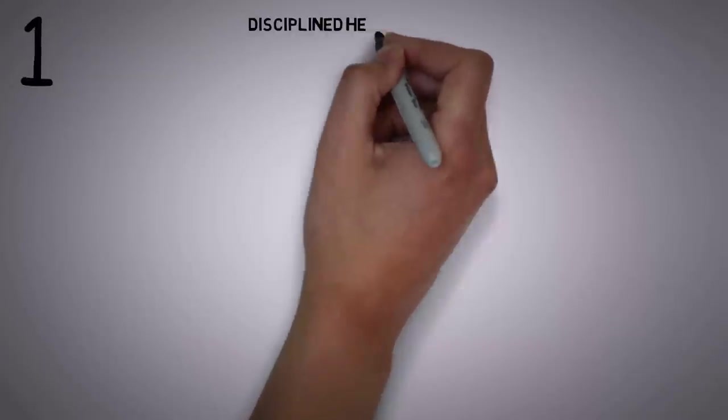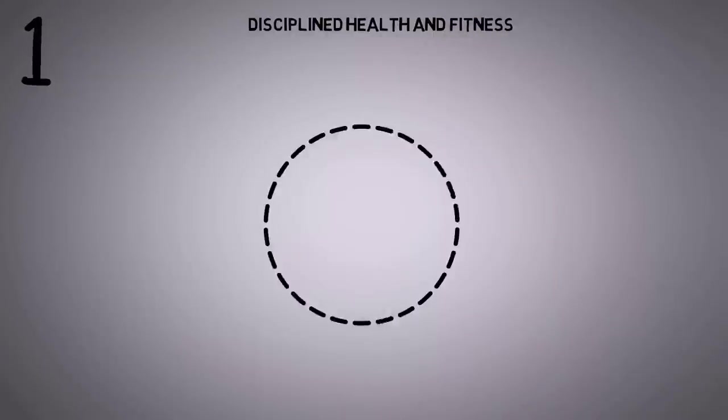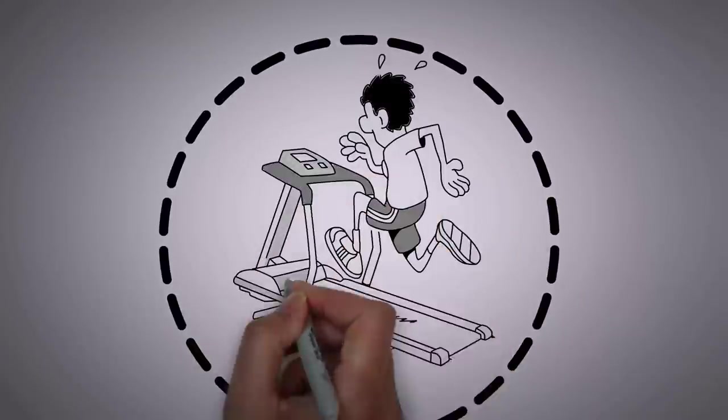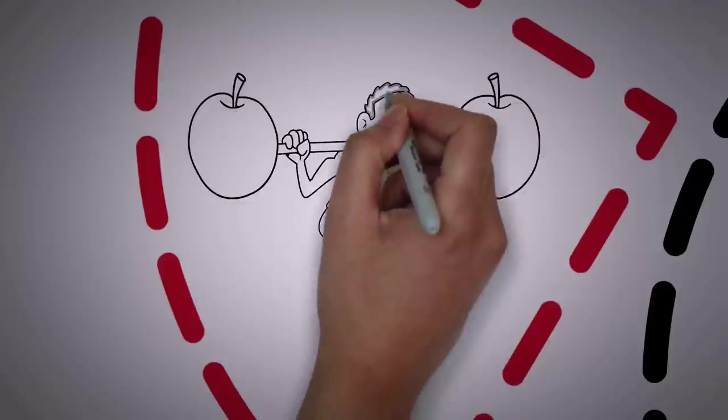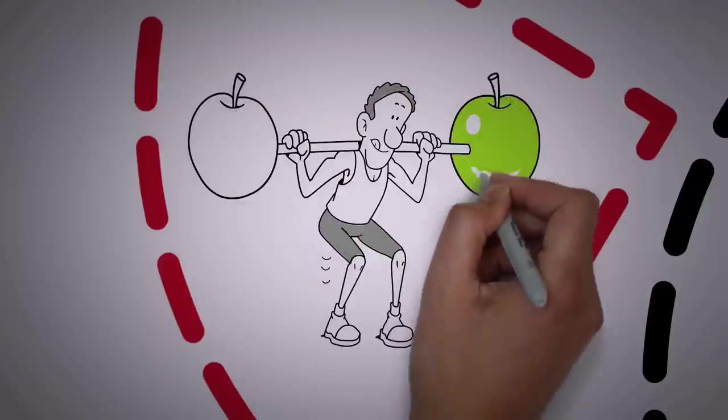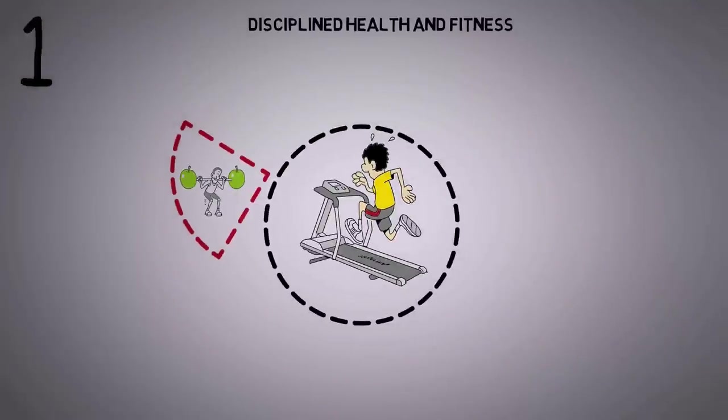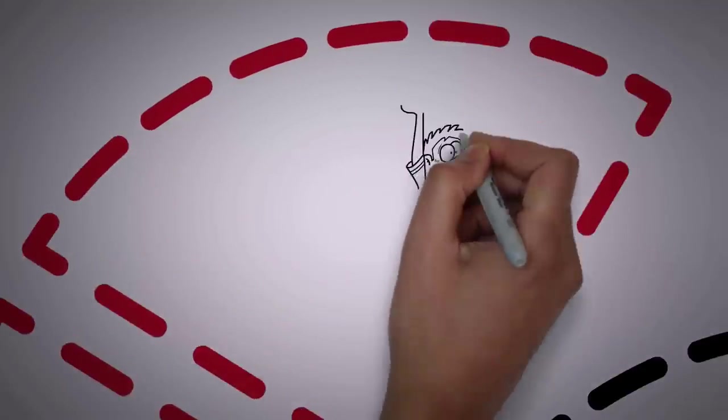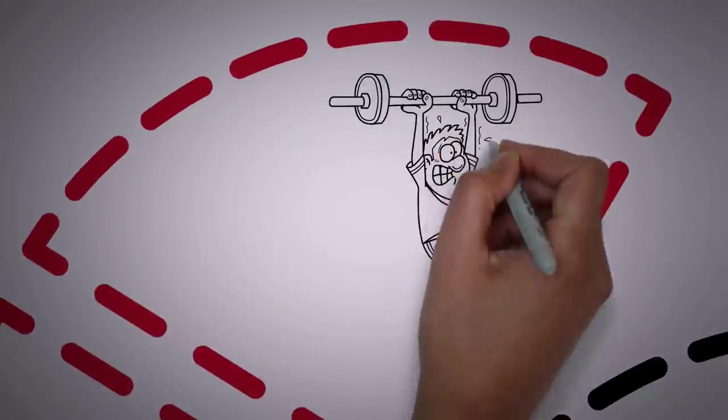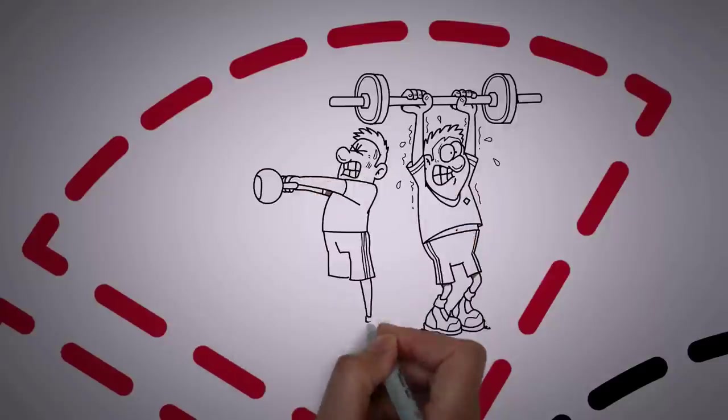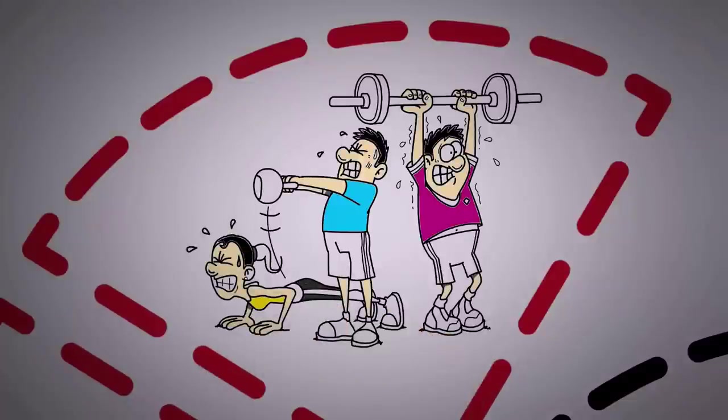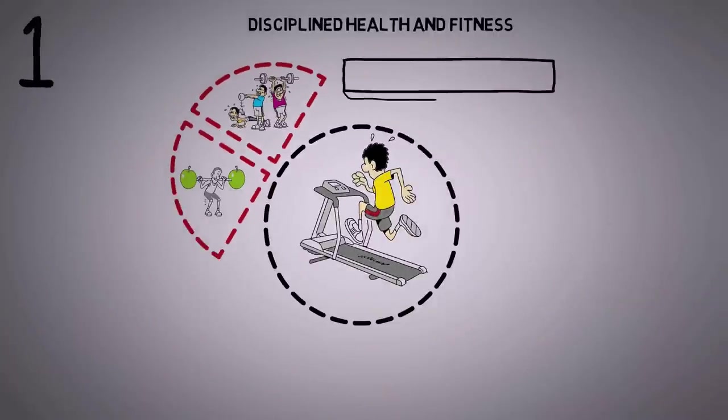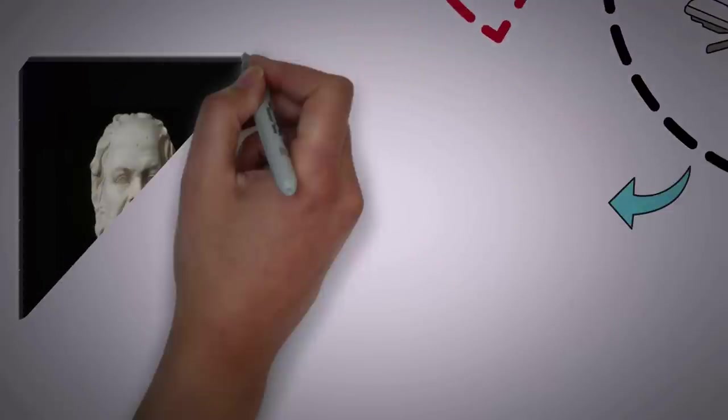Number 1. Disciplined Health and Fitness. Sigma males prioritize their physical and mental well-being. They recognize that their physical and mental well-being is the foundation for overall success and fulfillment in life. They prioritize exercise, nutrition, and self-care, understanding that a healthy body and mind are vital for optimal performance, longevity, and personal growth. They live by the principle: health is wealth.